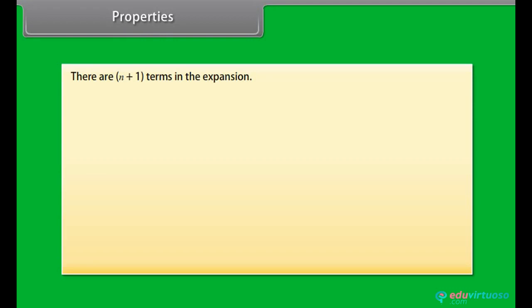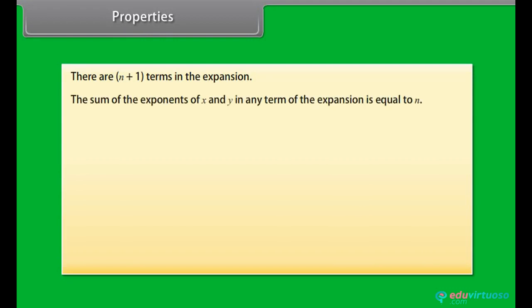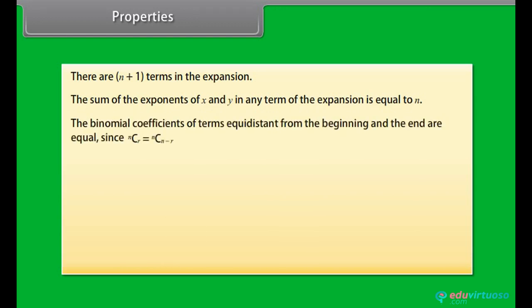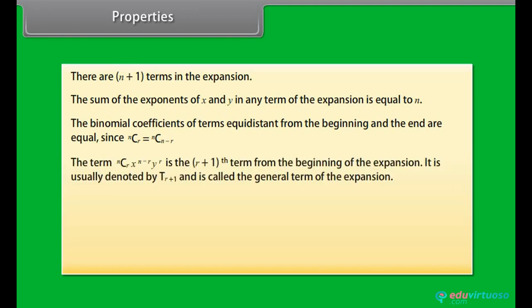Binomial theorem can be proved by induction. Properties: there are n+1 terms in the expansion. The sum of the exponents of x and y in any term equals n. The binomial coefficients of terms equidistant from the beginning and end are equal, since nCr = nC(n−r). The term nCr · x^(n−r) · yʳ is the (r+1)th term from the beginning, denoted tᵣ₊₁, called the general term.